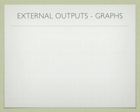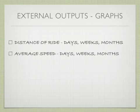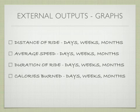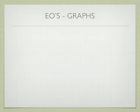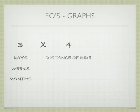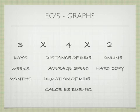Now let's talk about the external outputs for the graphs. You have Distance of the Ride in days, weeks, and months; Average Speed in days, weeks, and months; Duration of the Ride, the same; and Calories Burned, the same. So we have three time periods (days, weeks, months) times four types of graphs (Distance, Average Speed, Duration, Calories Burned), times two formats (online and hard copy) — equals 24 external outputs or graphs.